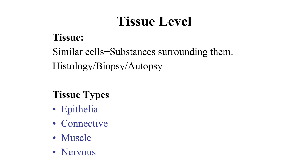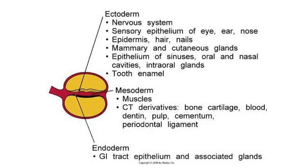There are four types of tissues: epithelium, connective tissue, muscle, and nervous tissue. These tissues develop from germ layers that form during development at gastrulation.